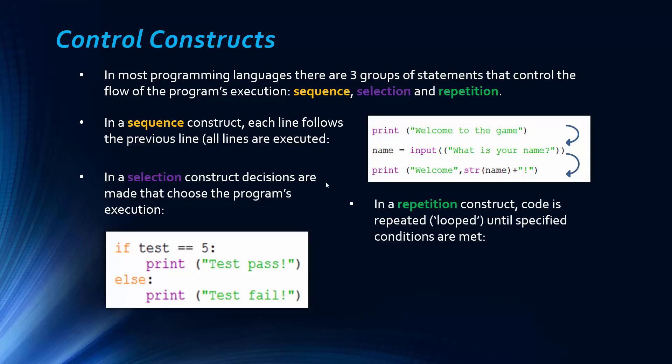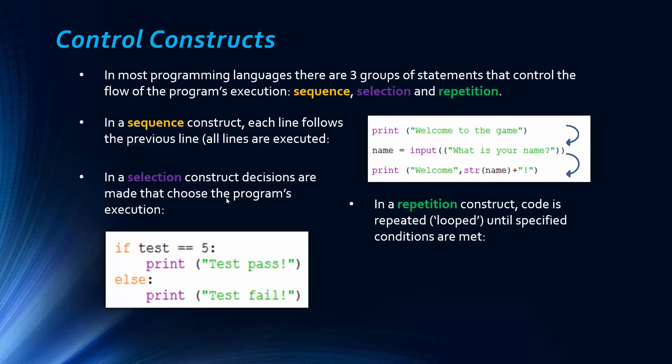And in a repetition construct, code is repeated. So another word for that is looped, in case you don't want to use the same word in the definition, until specified conditions are met. So again, this uses a condition. So this would be tested. If it's true or false, it would be evaluated. If the user input is not equal to password, then it would be asked to input it again. That's what this code does.